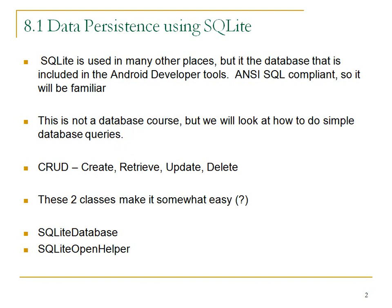We're going to create a one-table database on the Android device. It's called a private database, meaning only this application can see it. We will update it, add bowling scores to the database, and retrieve them in this segment — we won't do any deleting. We only have one activity so far where you enter the scores, and as of now they go into an array list. We need them to also go into persistent data storage on the device so the application can load that data when run the next time.